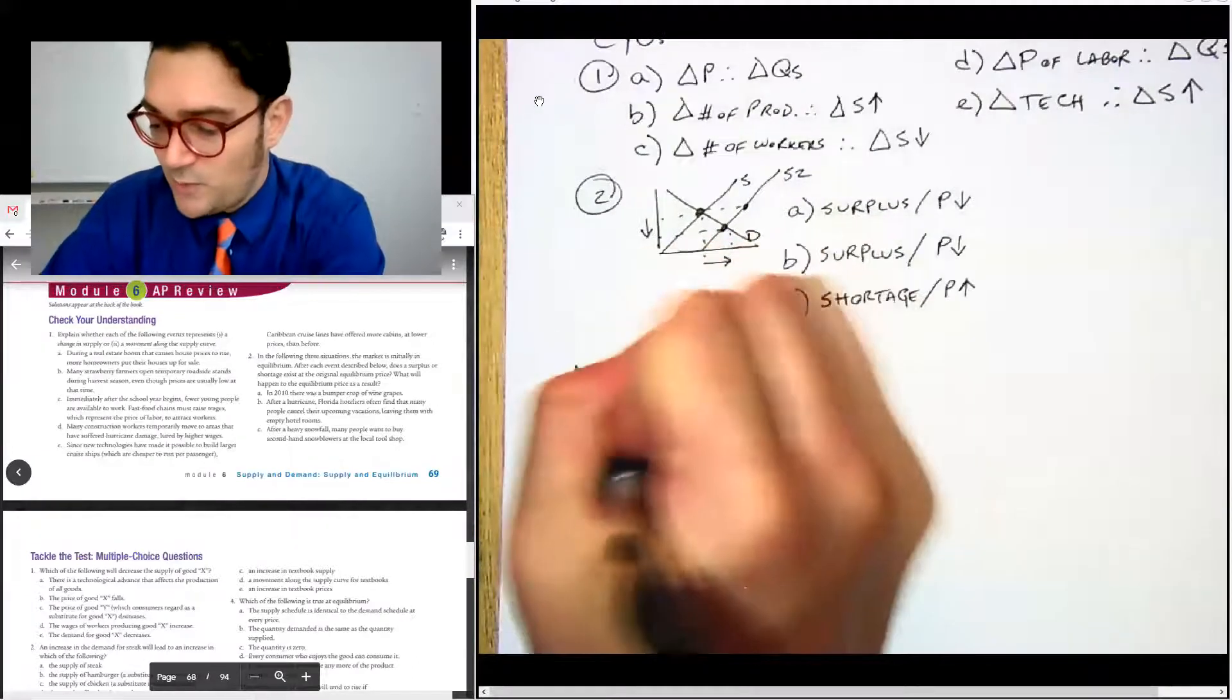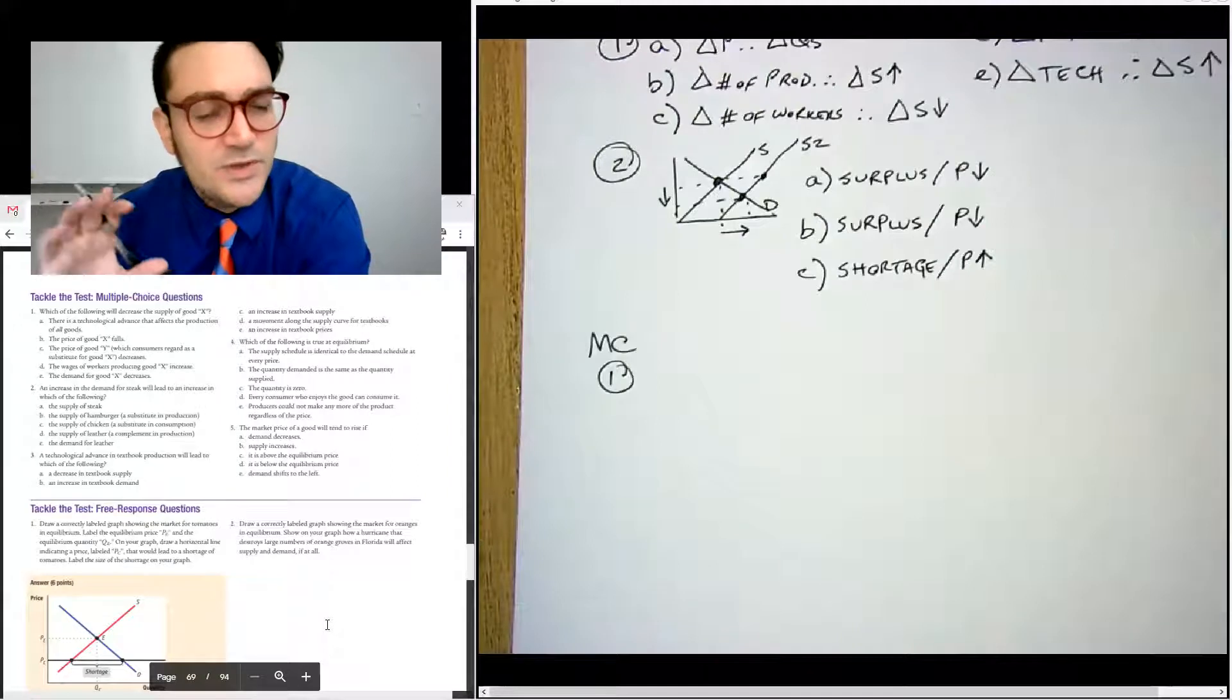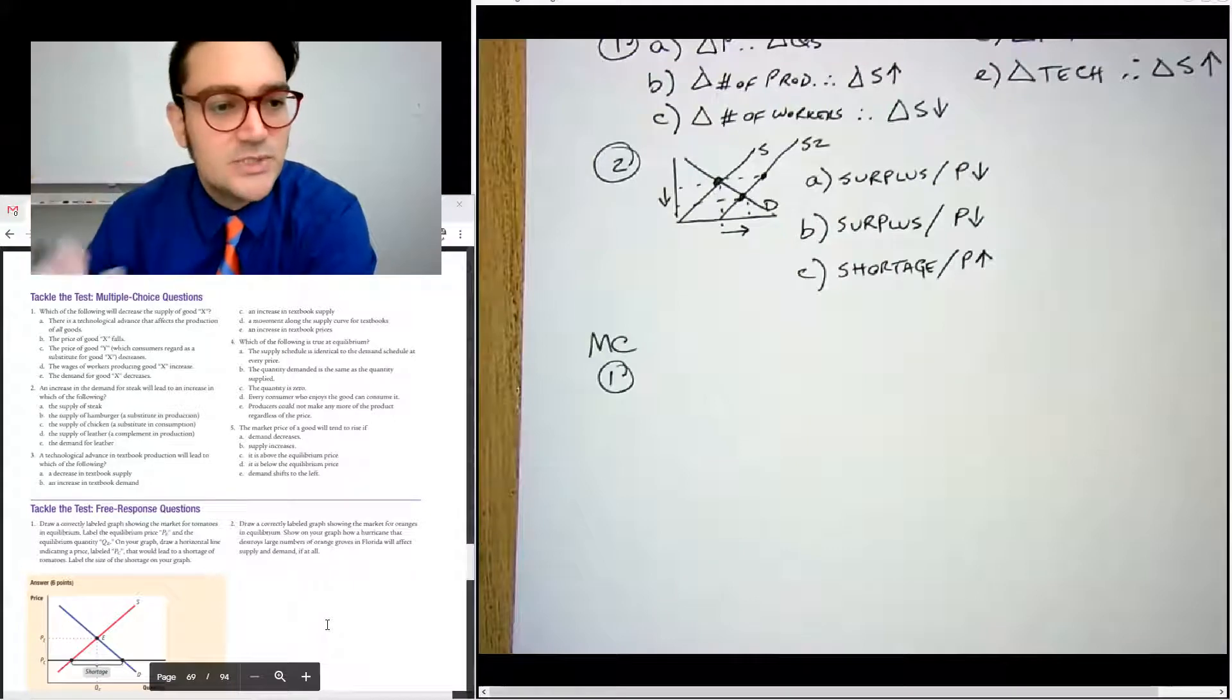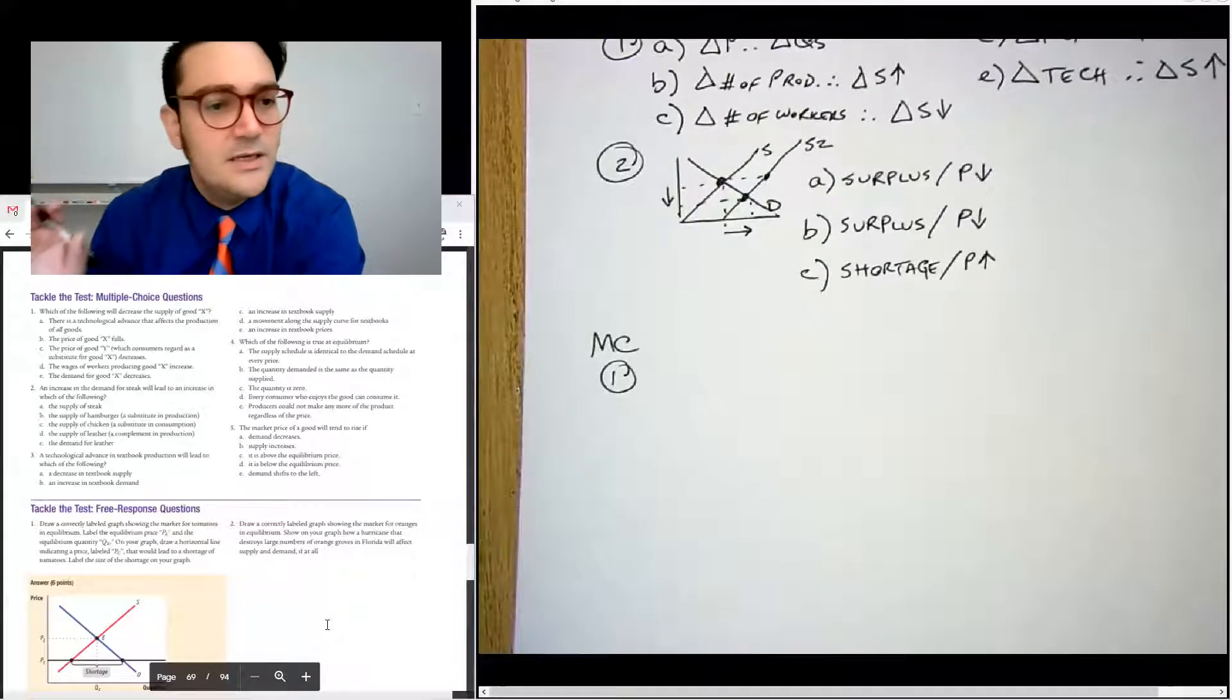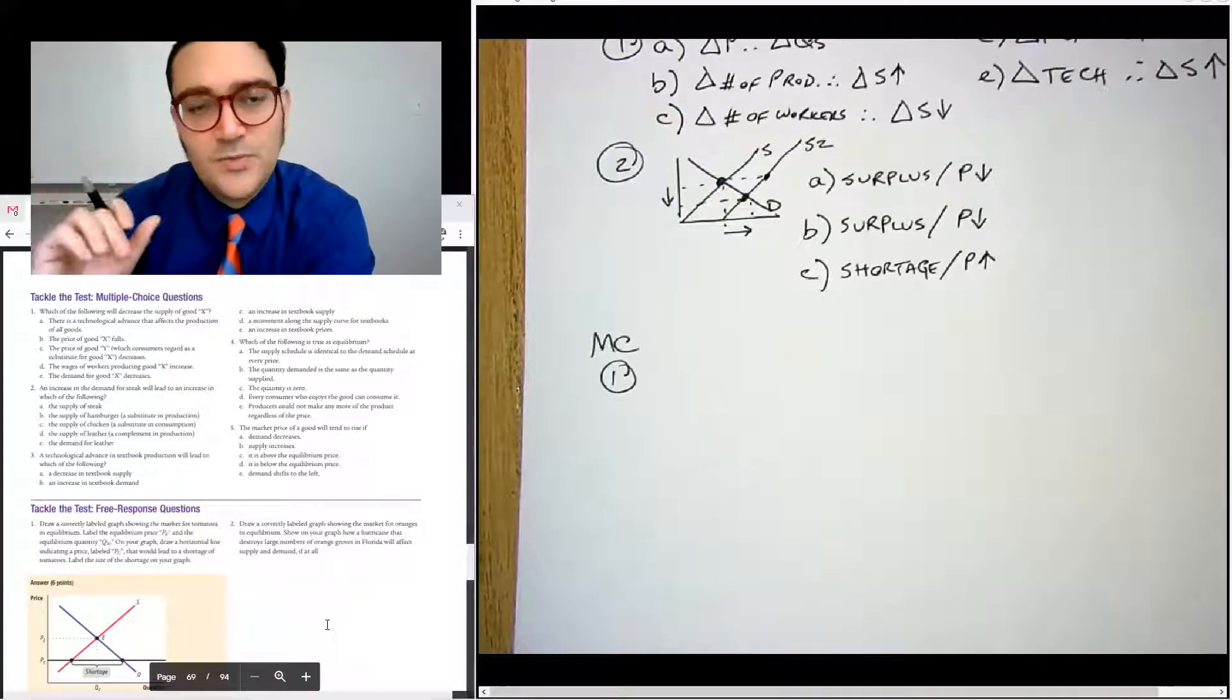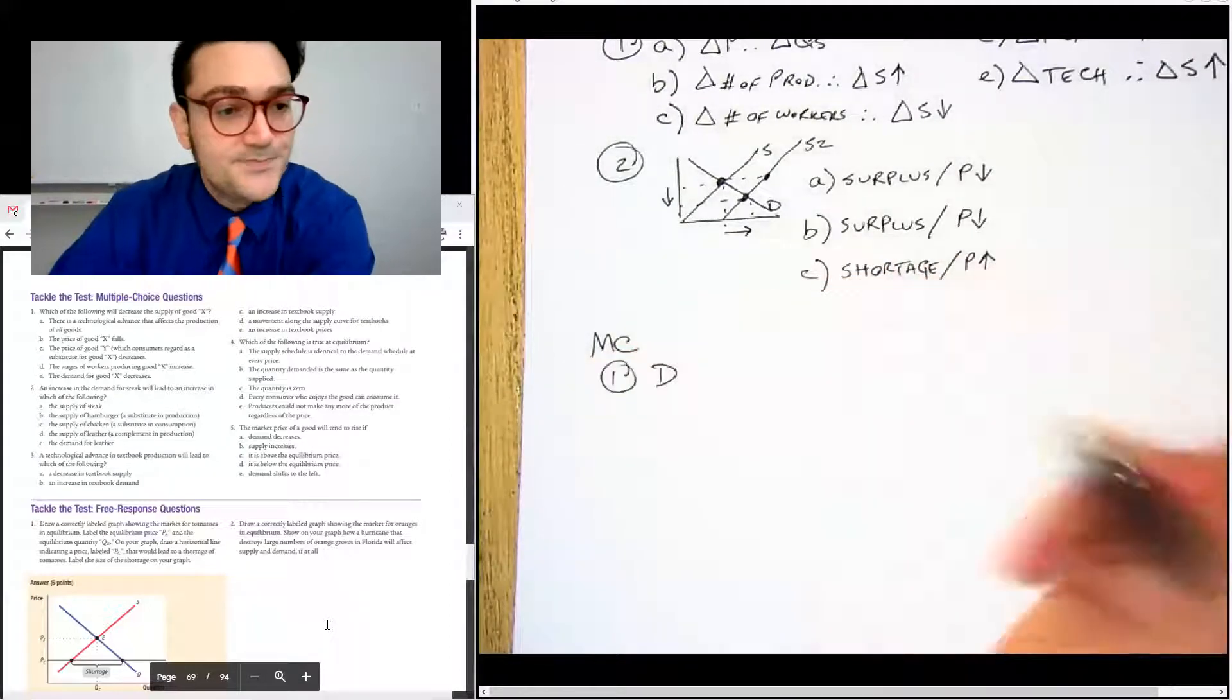Let's take a look at the multiple choice. Now, number one, let me scroll down a little bit, which of the following will decrease the supply of X. So for this one, let's think about NIDI. Number of producers, input costs, taxes, technology and expectations. There's a technological advance that affects the production of all goods. That's not going to really decrease the supply would increase. So we're going to rule out A. The price of good X falls, that price doesn't shift the curves. Get rid of that. C, the price of good Y, which consumers regard as a substitute decreases, that's not going to affect supply. The wages of workers producing good X increase. So remember I told you that wages are a really important input cost. And if the wages are rising for production, then that's going to increase costs and make it more expensive to produce. So decrease the supply of the good.